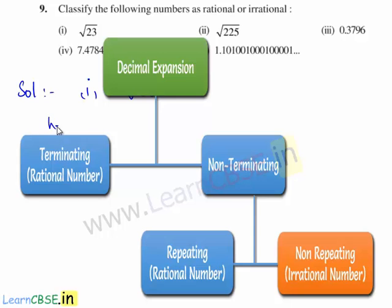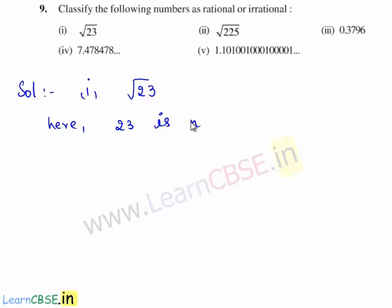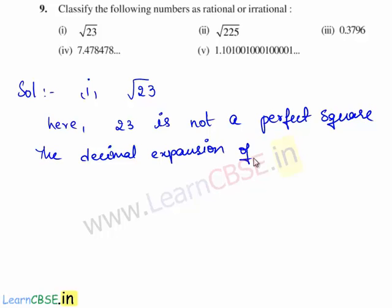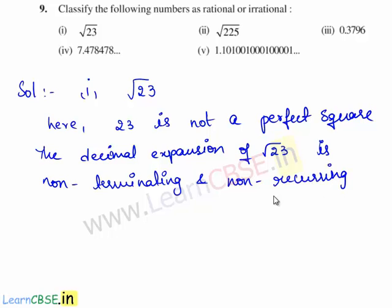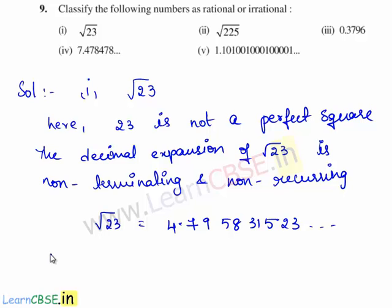We take the first bit: classify whether square root of 23 is rational or irrational. Since 23 is not a perfect square, the decimal expansion of √23 is non-terminating and non-recurring. Using the long division method, we obtain √23 = 4.795831523... The digits are not repeating. Therefore, square root of 23 is an irrational number.